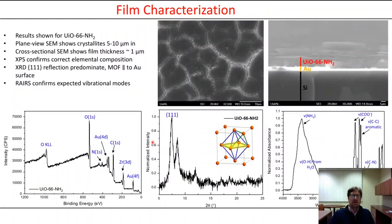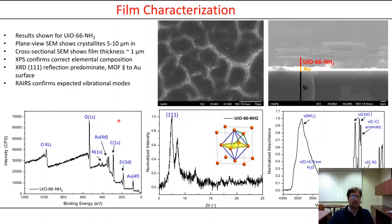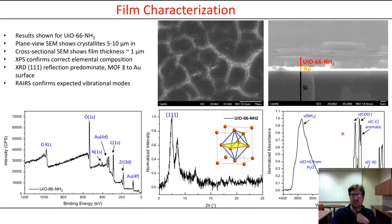We need very specialized surface sensitive and surface selective techniques to characterize thin films. We do a lot of electron microscopy — from this SEM cross-sectional image you can see from the scale bar that our film is about one to two microns, so there's not much material. We also do X-ray photoelectron spectroscopy for atomic composition, thin film X-ray diffraction for film orientation, and infrared and Raman spectroscopy to confirm the functional groups we expect to be present.